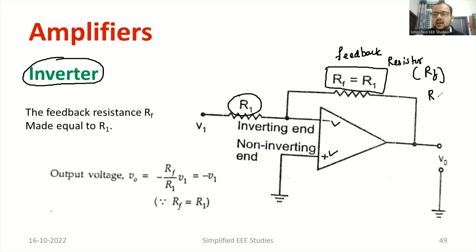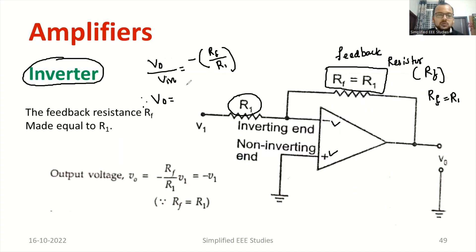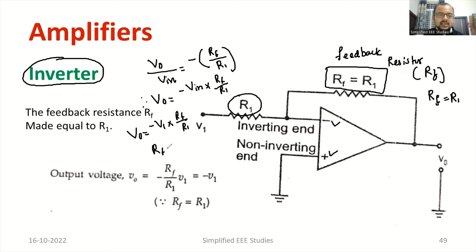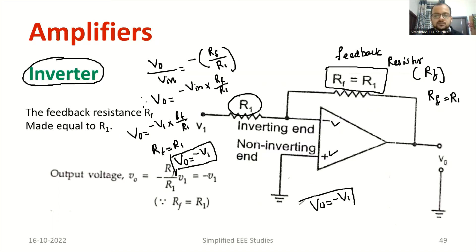While designing, do take care: Rf must be equal to R1. Therefore, what is the gain? You know that V0 divided by Vin equals minus Rf by R1. So output voltage equals minus Vin into Rf by R1, or minus V1 into Rf by R1. Since Rf equals R1, V0 equals minus V1. That means the output is inverted with respect to the input. That is how the op-amp acts as an inverter.